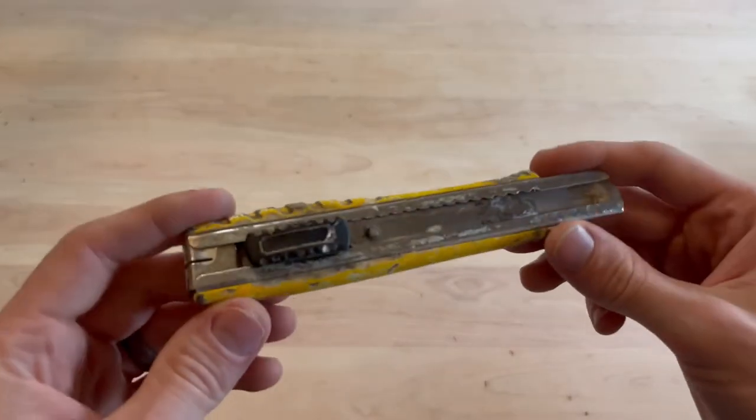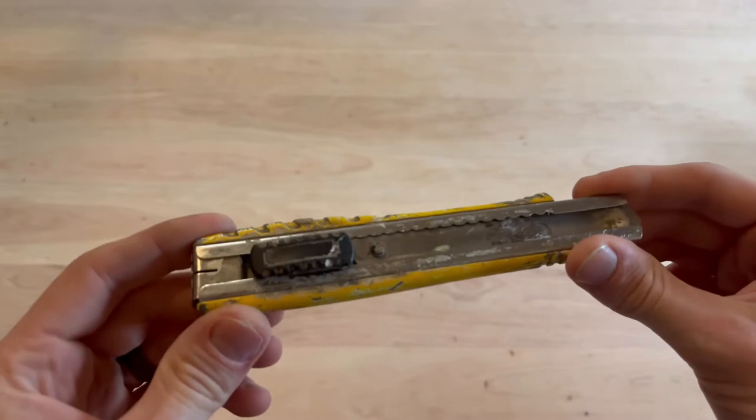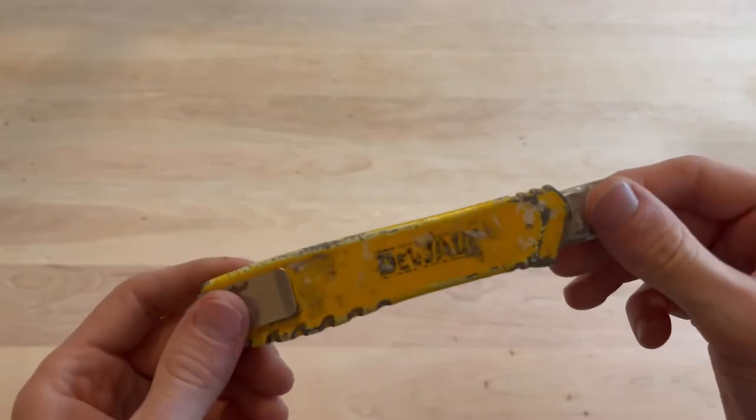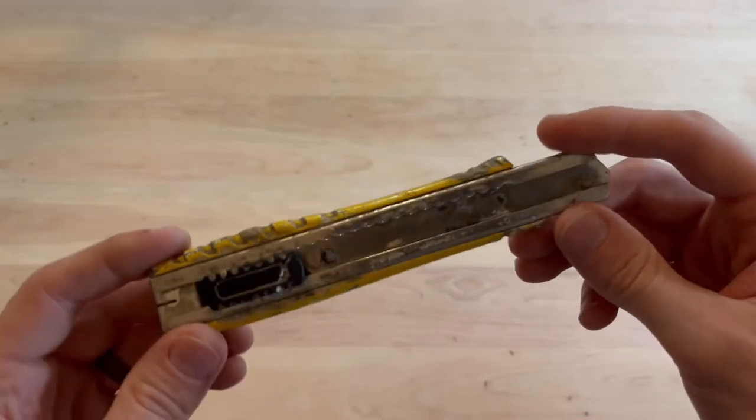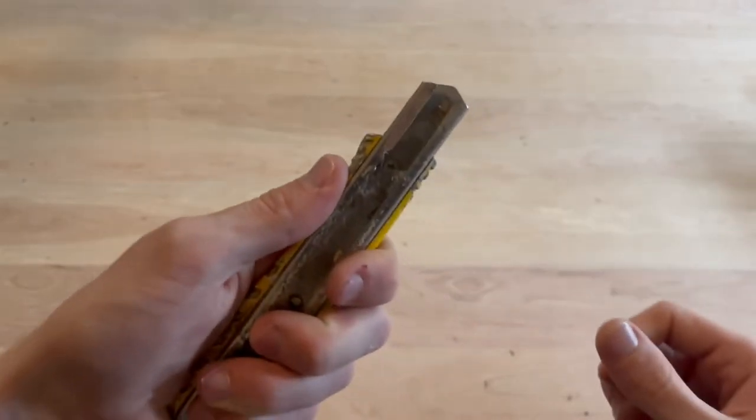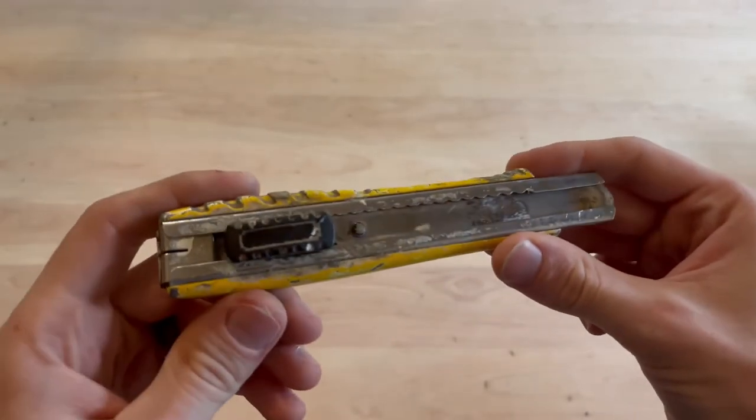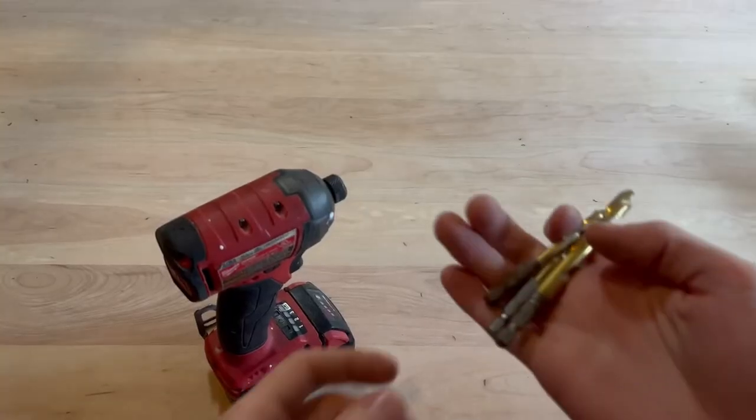Now DeWalt makes three sizes of these. This is the mid-range, it's an 18 millimeter. They have a 25 millimeter as well as a 9 millimeter, but this is kind of the middle of the road size. It's good to hold in your hand, not too large, not too small, so for everyday purposes this works great.